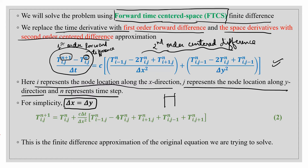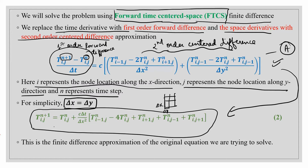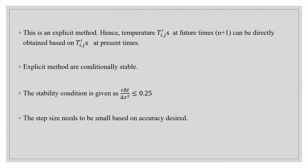If we set Δx equal to Δy — that is, we do equal discretization in both x and y directions — the formula simplifies. The resulting equation is the finite difference approximation for the original PDE we are trying to solve. This is an explicit method where the temperature at the future time n+1 can be directly obtained from the temperature at the present time.